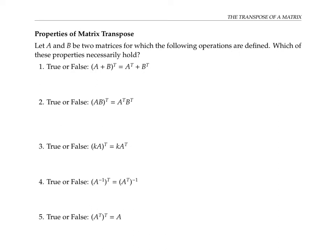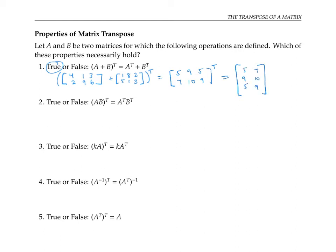The first property is true. If we take two matrices and add them up and then take the transpose, we can think of that as adding them together row by row and then switching the rows to columns. But we get the same thing if we first switch the rows to columns and then add them up column by column.